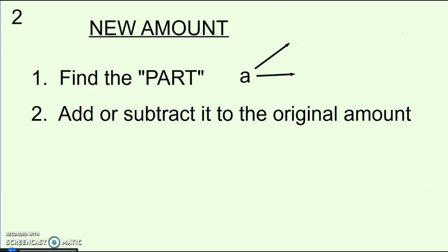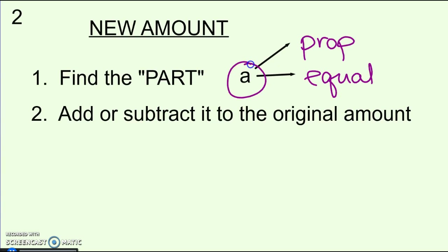This is the second type of problem — finding the new amount. There are two steps: first, find the part (A), using either the proportion or equation from sections 6.3 or 6.4. Then you're either going to add or subtract it to the original amount, depending on whether it's going up or down.